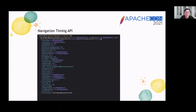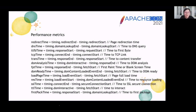Using the performance API and getEntriesByType('navigation'), we can get those performance properties. Using this data, we can calculate many important metrics such as: page redirection time, time to DNS query, time to first byte, time to TCP link, time to content transfer, time to DOM analysis, first append time, time to DOM ready, page full load time, time to resource loading, time to SSL connection, time to interact, and time to first package.